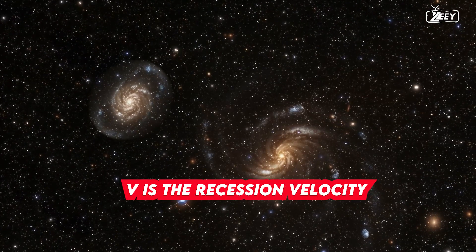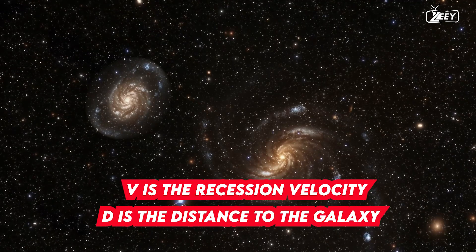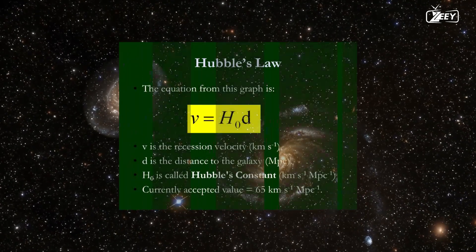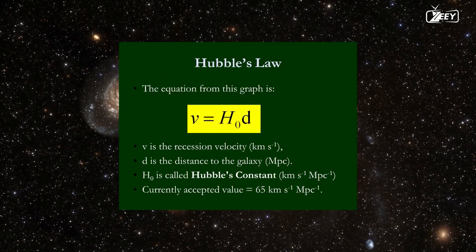V is the recession velocity and D is the distance to the galaxy. If this is the case, then D can be used to compute V.